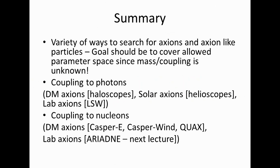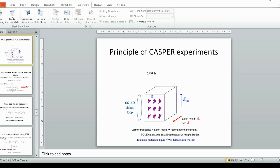There's a variety of ways to search for axions. As an experimentalist, we should try to cover the entire allowed mass range since we don't really know the mass for certain. You can look at coupling to photons through some experiments, and coupling to nucleons through experiments like CASPER. For nucleons, we can look for dark matter axions, but we can also look for lab-created axions — this is the idea with the Ariadne experiment.